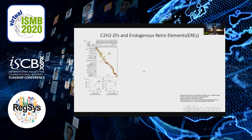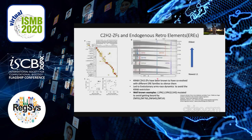A lot of prior work has documented in detail how some of these C2H2 zinc fingers — the KRAB zinc fingers in particular — are known to have co-evolved with different families of endogenous retroelements. This co-evolution happened because these KRAB zinc fingers evolved to silence some of these endogenous retroelements.